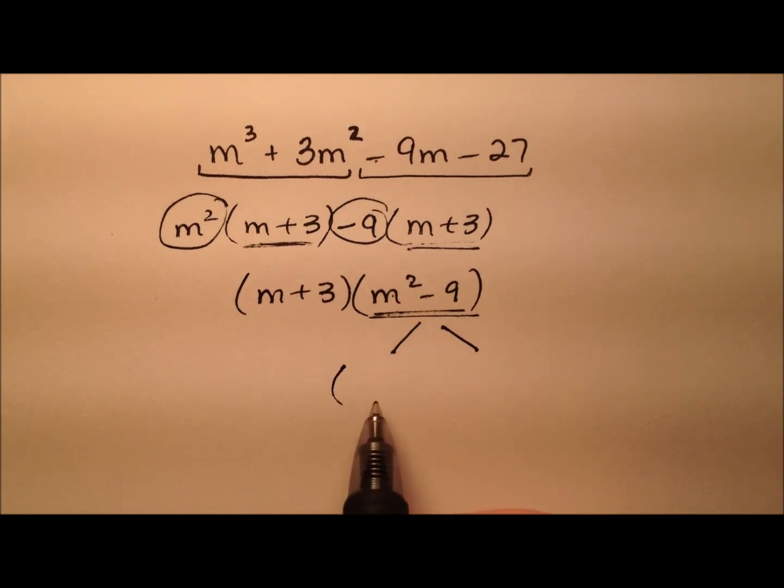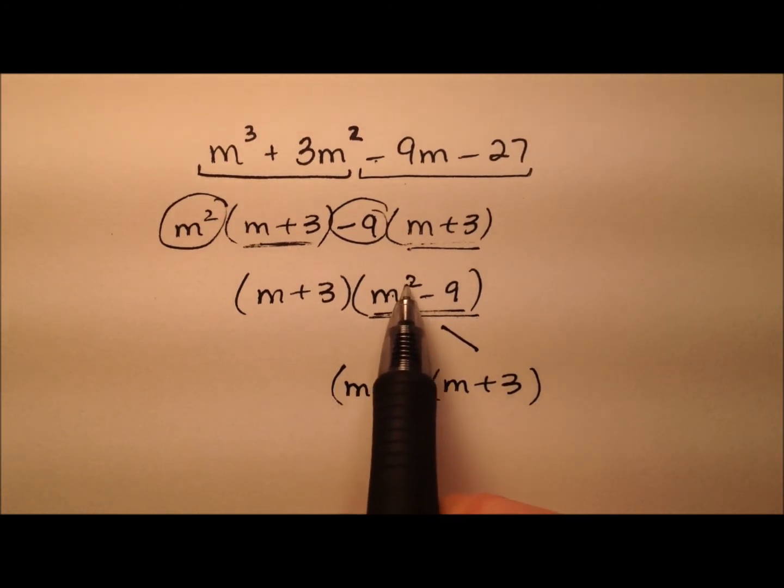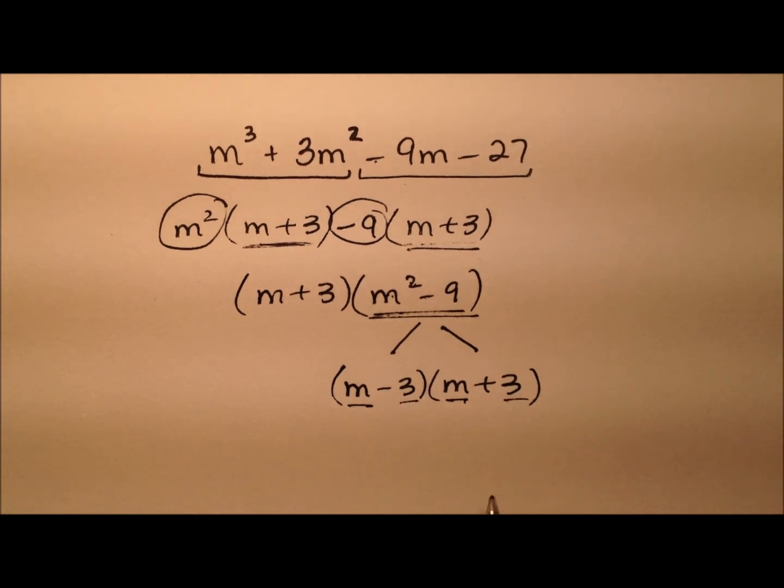So I'm going to factor that down to m minus 3 and m plus 3, because the square root of m squared is m, and the square root of 9 is 3, and we have 1 minus and 1 plus. And then this m plus 3 will come along for the ride.